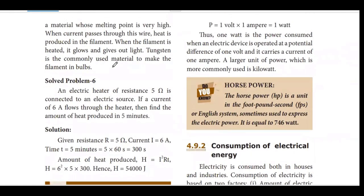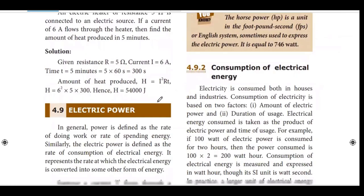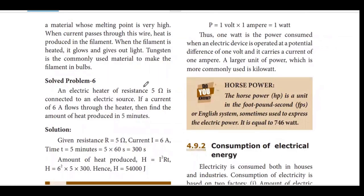This is the problem 6. An electric heater of resistance 5 ohm is connected to an electric source. If a current of 6 ampere flows through the heater, then find the amount of heat produced in 5 minutes. This is the heat-related formula. Joules heating formula. H is equal to I squared RT.